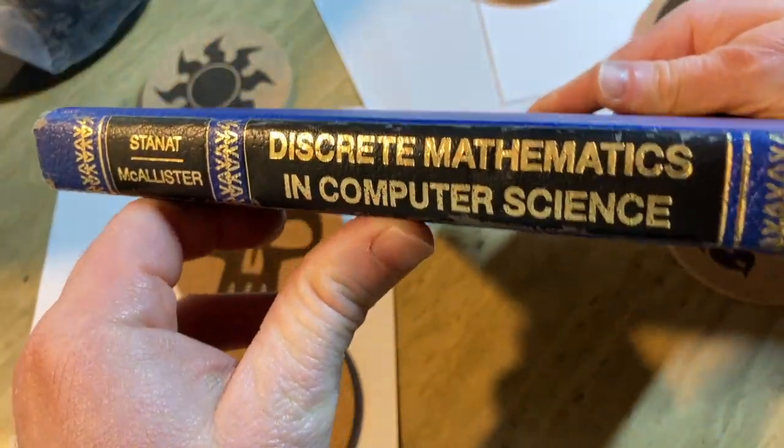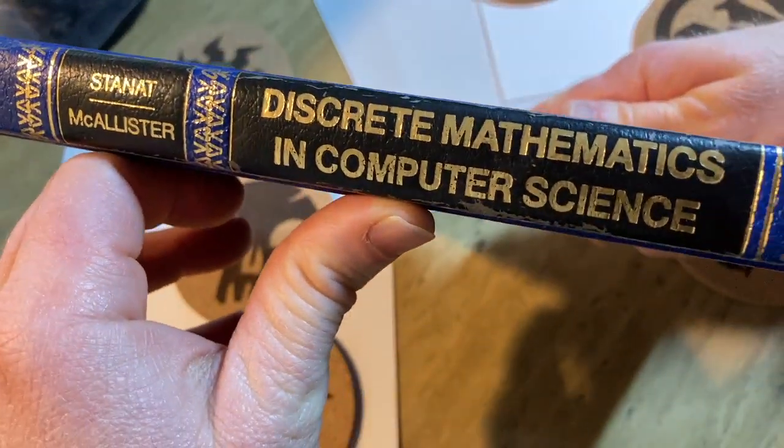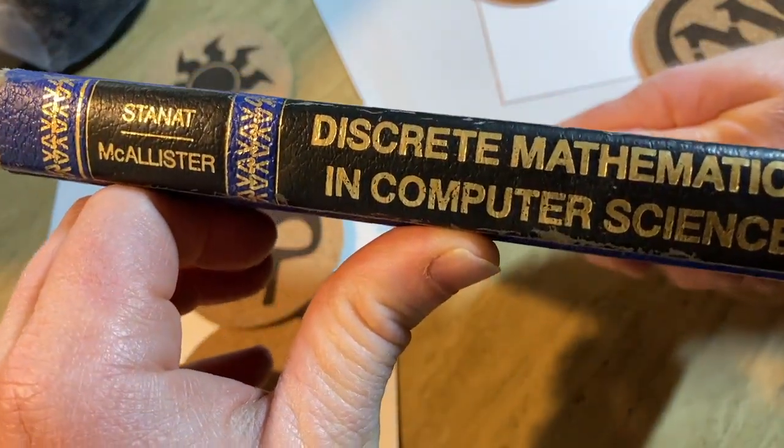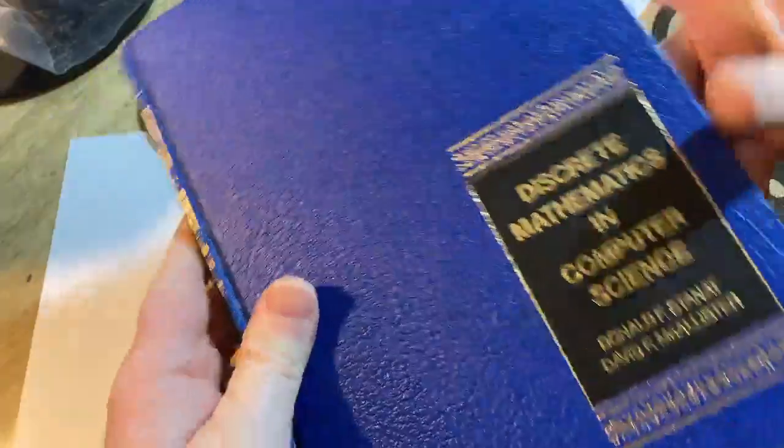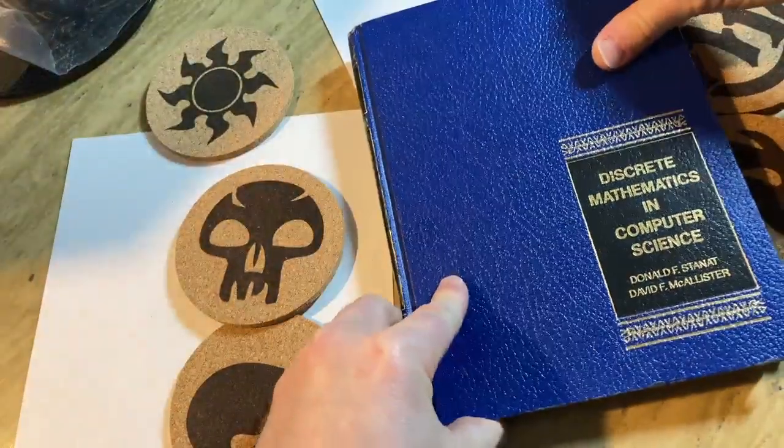And it's got this really interesting blue cover. I love the gold lettering. Beautiful. Discrete Mathematics in Computer Science. Just a really good-looking book.